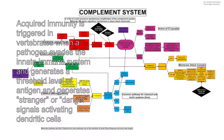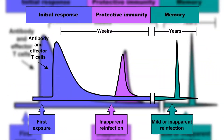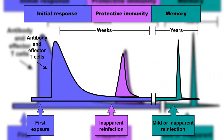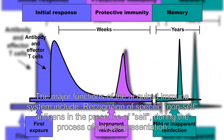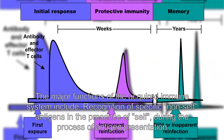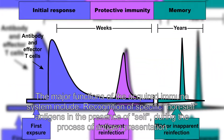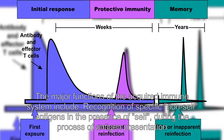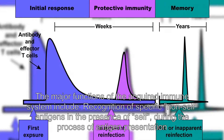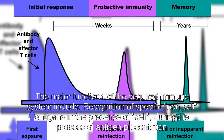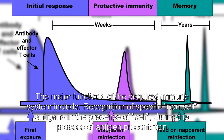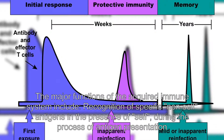A theoretical framework explaining the workings of the acquired immune system is provided by immune network theory. This theory, which builds on established concepts of clonal selection, is being...